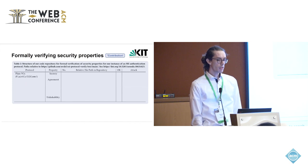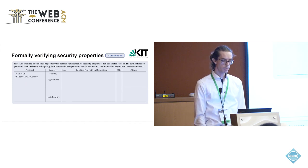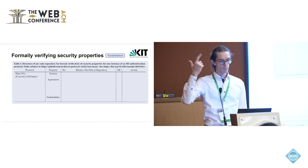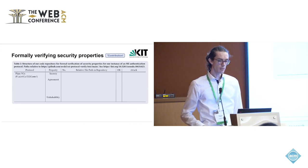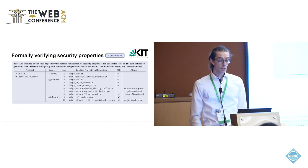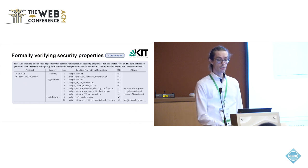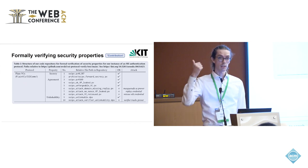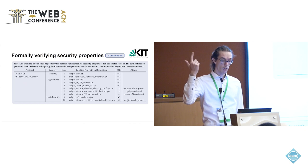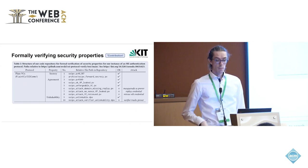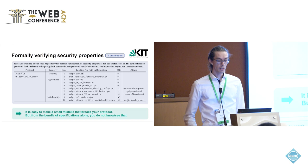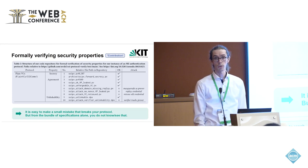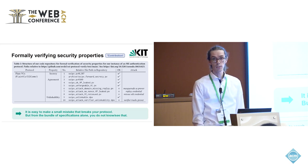Now we can formally verify the security properties: secrecy, authentication by agreement, and unlinkability. Indeed, we can achieve secrecy and agreement. But if you miss single things like a recipient, a domain, a nonce, or a challenge, you make small mistakes that lead to attacks on your protocol — mistakes you would have missed without formal verification, because the specifications won't tell you that in detail.